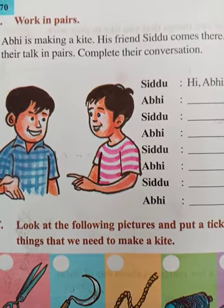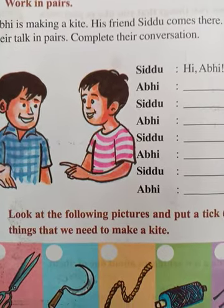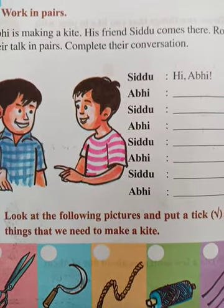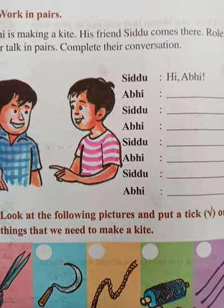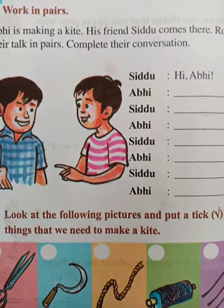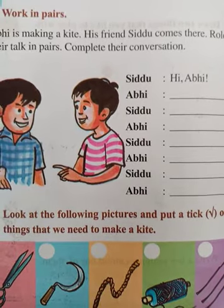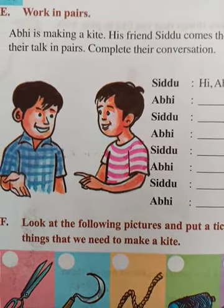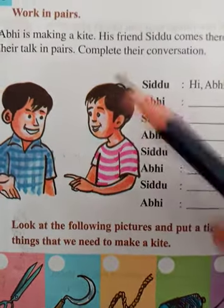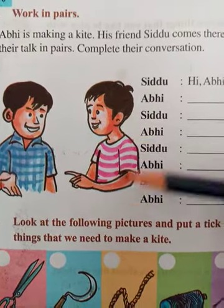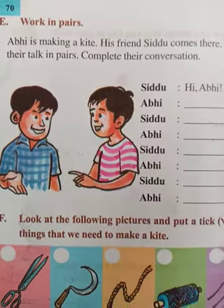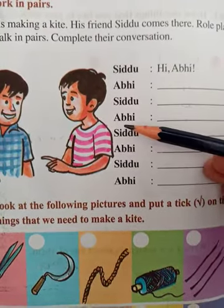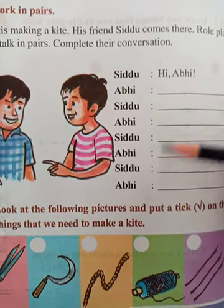Here Abhi is making a kite. You love flying kites, right? We can also prepare our own kites at home — we need a newspaper or wooden sticks, thread or yarn, and a ribbon tail. So here Abhi is making a kite and his friend Sidhu comes there. We have to role-play their conversation and write it.